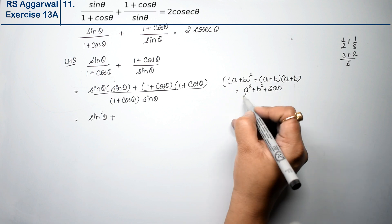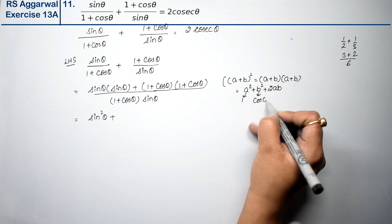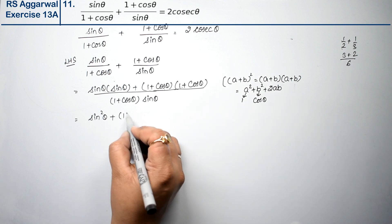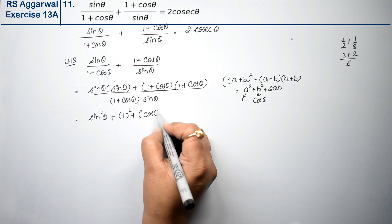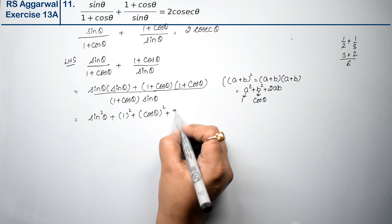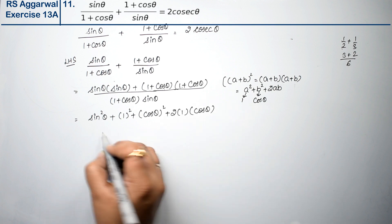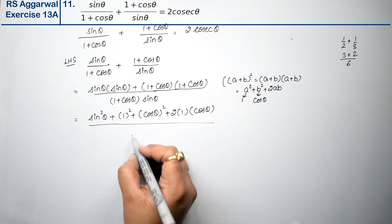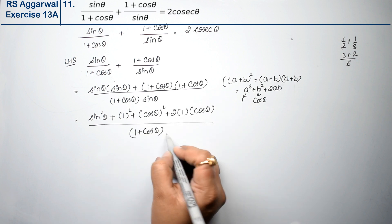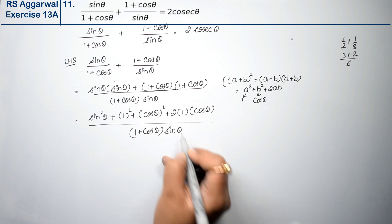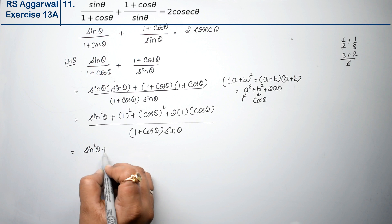So expanding: a squared is 1, plus b squared which is cos squared theta, plus 2ab which is 2 cos theta. So the numerator is sin squared theta plus 1 plus cos squared theta plus 2 cos theta, all upon sin theta into (1 plus cos theta).